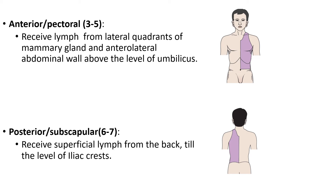The anterior or pectoral group, which are 3 to 5 in number, receive lymph from the lateral quadrants of the mammary gland — the mammary gland being divided into four quadrants — and also drain the anterolateral abdominal wall down to the level of the umbilicus.